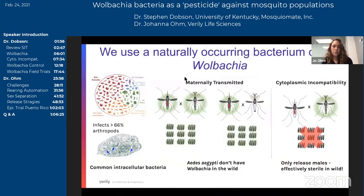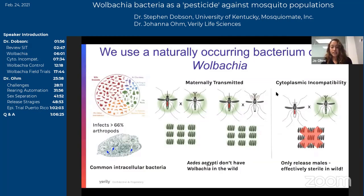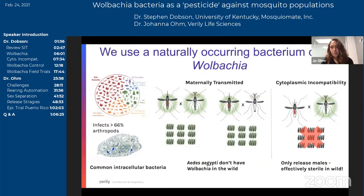DEBUG is a project based at Verily Life Sciences and we develop tools — including hardware and software tools — to really make the process of producing massive numbers of Wolbachia-infected male mosquitoes more efficient. As Steven thoroughly went over, Wolbachia is a bacteria that naturally occurs in most insect species. We use a trans-infected line of Aedes aegypti that has a Wolbachia infection, which when released into wild populations has this phenotype called cytoplasmic incompatibility — meaning our released Wolbachia-infected males are incompatible with the wild females that are not infected.